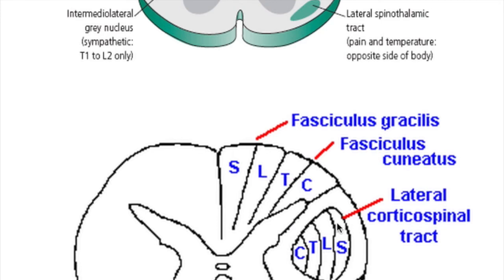The somatotopic arrangement of these tracts is important. In the lateral corticospinal tract, the sacral region is represented laterally and the cortical fibers are medially arranged. Therefore, a lesion lateral to the corticospinal tract progressing medially will affect the sacral part first. In the posterior columns, the arrangement is reversed: sacral fibers are medial and cervical fibers are lateral.